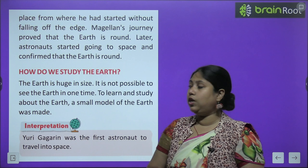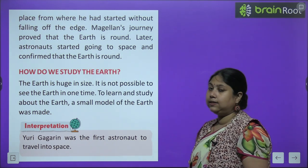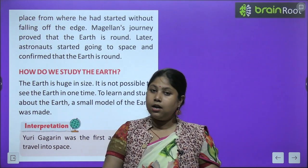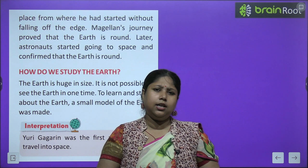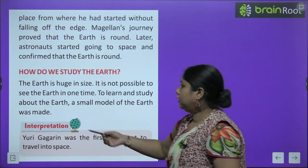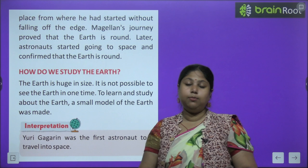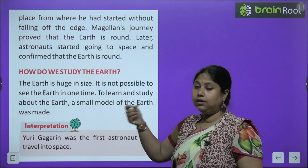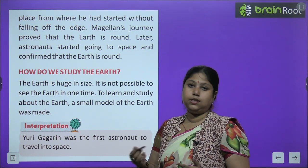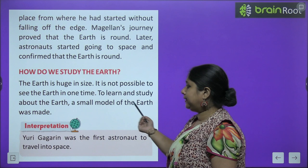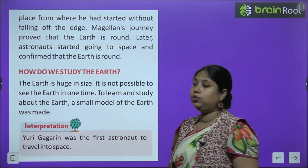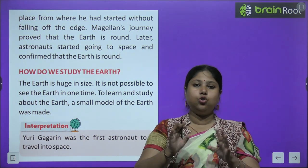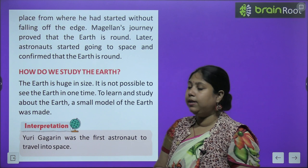How do we study earth? Hamein earth ke baare mein agar padhna hai ya jaanna hai toh kaise padhai? Earth toh bahut bada hai — humari prithvi bahut badi hai, uske baare mein jaanne ke liye kya kiya jaaye? The earth is huge in size — huge ka matlab hota hai big. It is not possible to see the earth at one time — earth ko ek samay pe poori tarah se dekhna possible nahi hai. To learn and study about the earth, a small model of earth was made — earth ke baare mein jaanne ke liye, earth ka ek chota sa replica, yaani chota sa model banaya gaya.